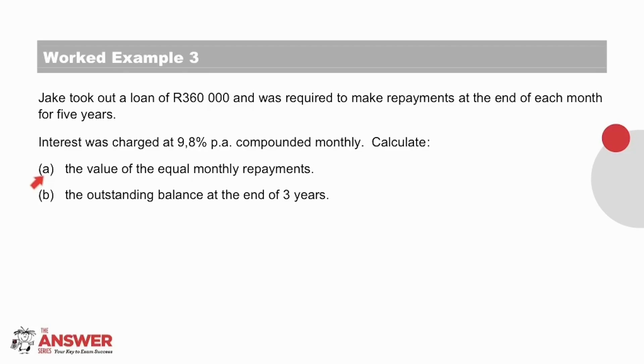Now that we have read the whole question, let's focus on part A. Calculating the equal monthly repayments means calculating X in our annuity formula. Note that because we are given the value of the loan, we are in fact given the present value. Pause here and give part A a try.